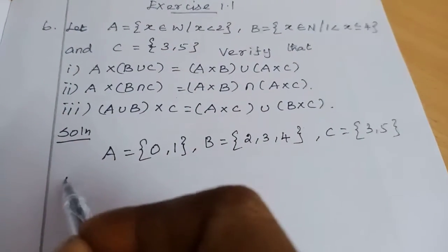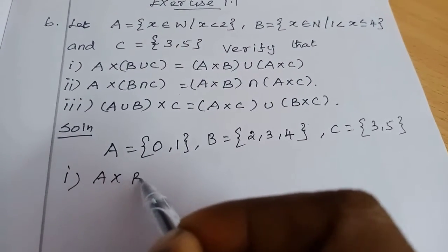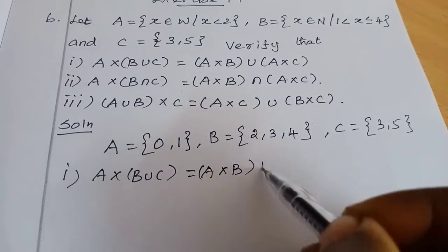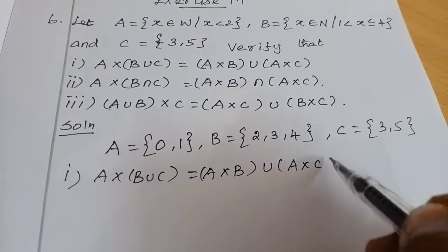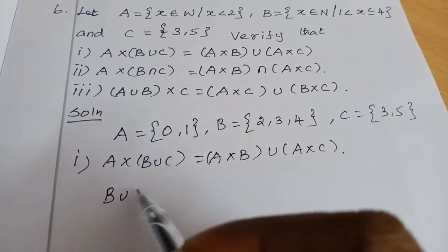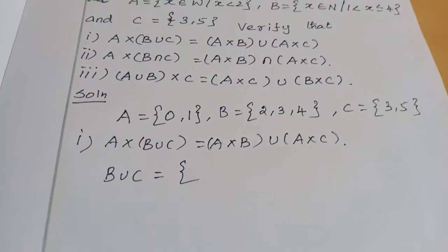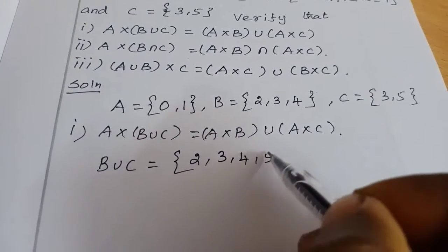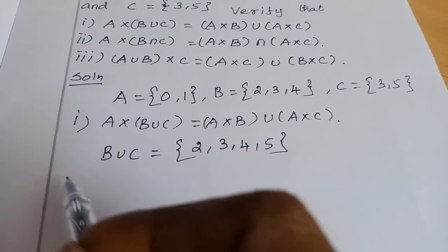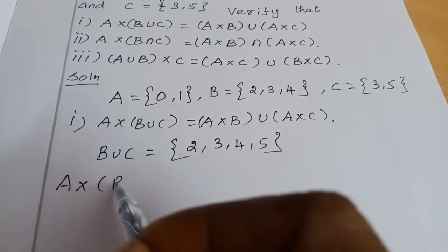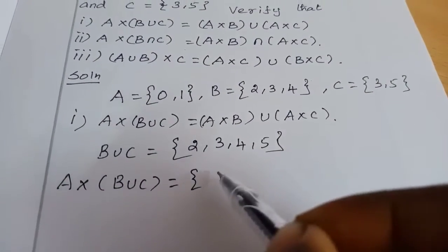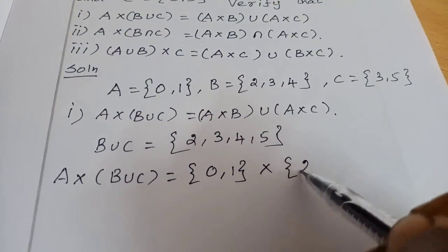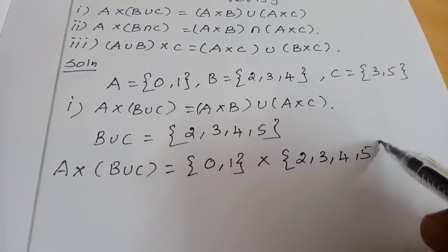Now we do the first problem: verify A×(B∪C) = (A×B)∪(A×C). First, find B∪C. Combining B and C without repeating elements gives {2, 3, 4, 5}. So A×(B∪C) = {0,1} × {2,3,4,5}.